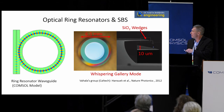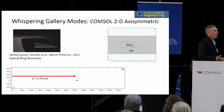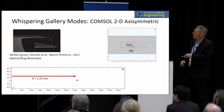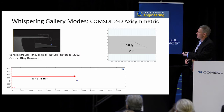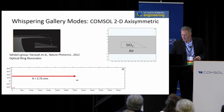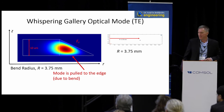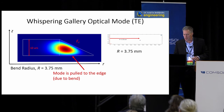They make it out of SiO2 wedges — silica wedges. To simulate this in COMSOL, we use the axisymmetric geometry, where the cross-section is on the order of 10 microns in height but the ring diameter is a few millimeters. Using the axisymmetric equations and modal analysis, you can pull out the mode. Because of the bend radius, it pulls the mode out towards the edge. It's very important to design the optics and the acoustics simultaneously.